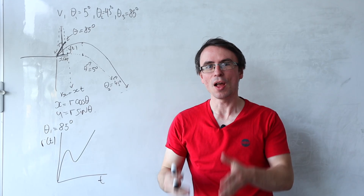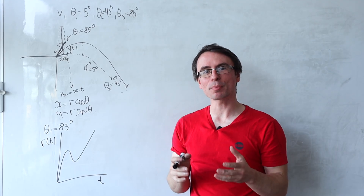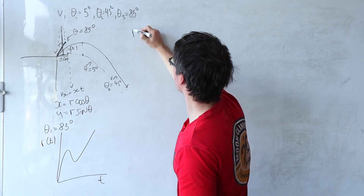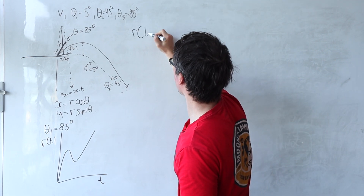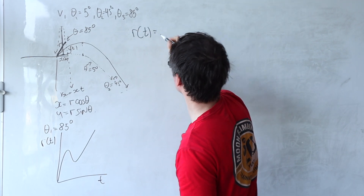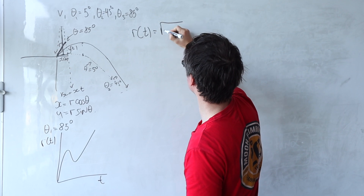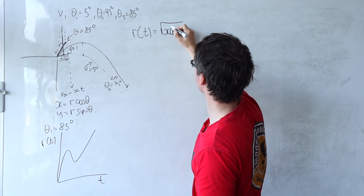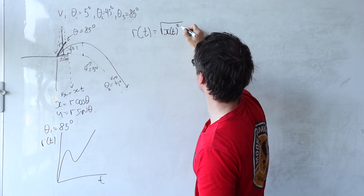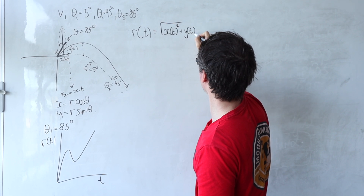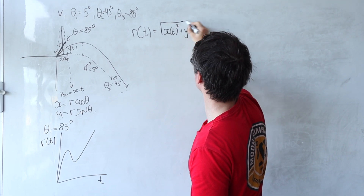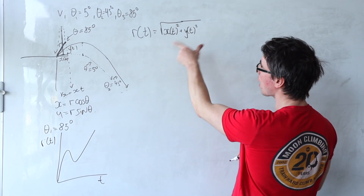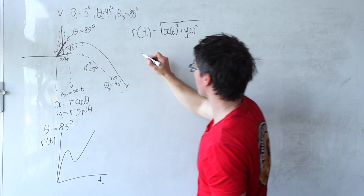Here are the actual plots from Wolfram Alpha - we were pretty close. For the next part we need to obtain an expression for r as a function of t, which is the square root of x(t)² + y(t)². How do those depend on time?